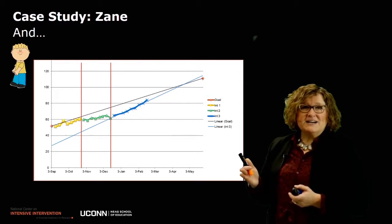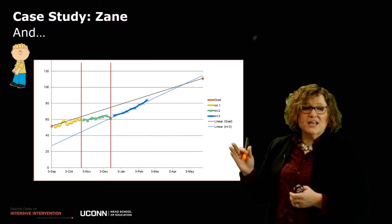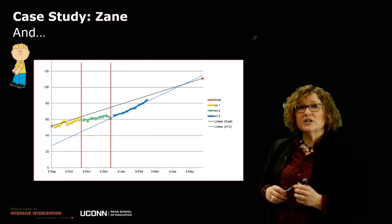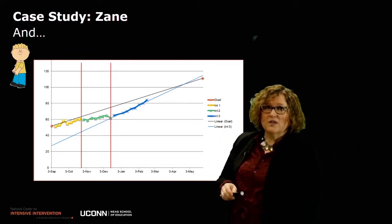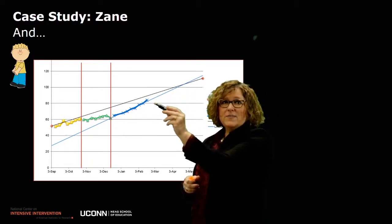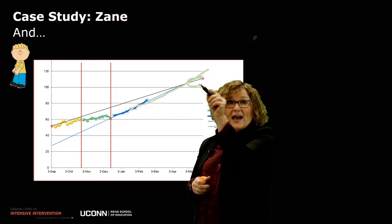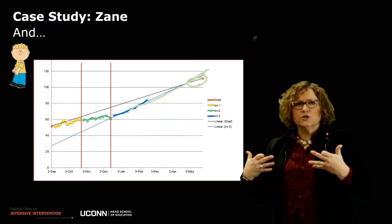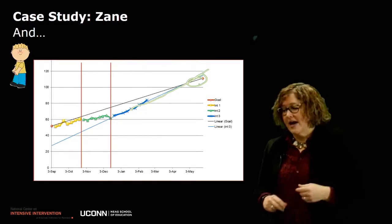Now we see that Zane is making progress and is on track to meet his goal. Ms. Smith has implemented a change that incorporates reading at the passage level, immediate corrective feedback, and continued decoding and phonemic awareness instruction. His data in blue indicates that now his trend is on track to meet his goal line — in fact, his trend line shows he's actually going to surpass his goal line. That's the kind of trend we want to see: matching or surpassing the goal line to indicate the intervention is having a positive effect on student progress.